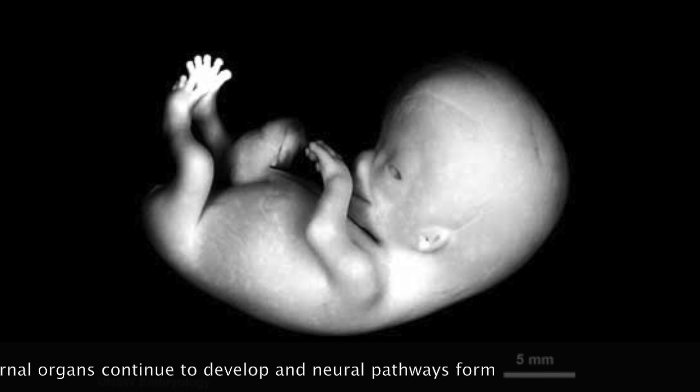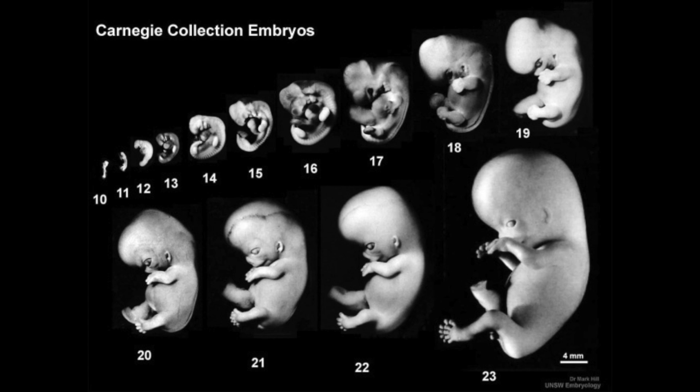At the end of week eight, about 90% of the adult's anatomical structures are formed. This is the final week of embryonic development. After this, we describe all future development inside the womb as fetal development. The fetal stage allows for the further maturation of the organ systems developed in the embryonic stage, leading to a smooth transition to independent living outside the womb.